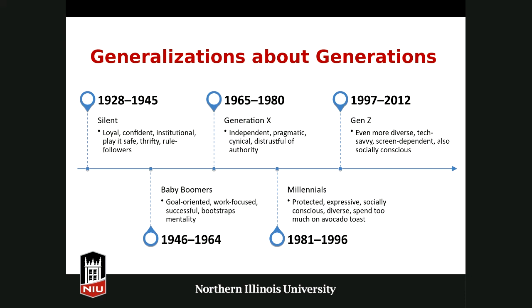So all of this leads into the next question: why do you think people try to generalize the characteristics and values of each generation? What do you think is the purpose of that? Participants suggest: for understanding, consumerism to design products, easier to make quick assumptions, understanding demand, solidarity with similar people and distance from others, marketing, audience targeting, and convenient explanations.